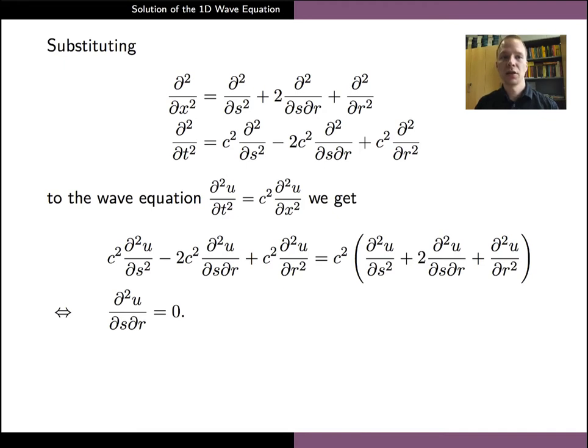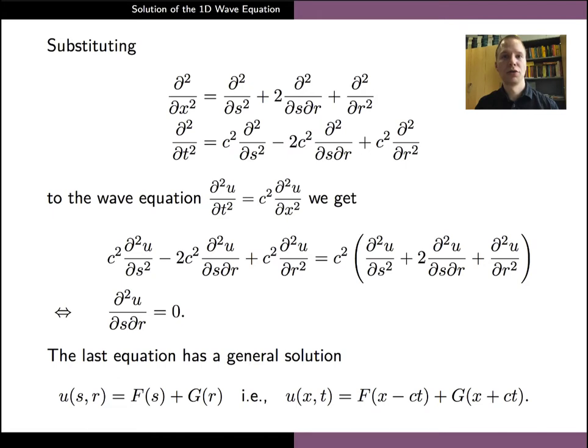Since this is quite a simple equation, it has a general solution that consists of a sum of two functions f and g, each depending on one of the variables s and r. If we now substitute the expressions of s and r into this formula, we get the general solution for our wave equation in terms of x and t.